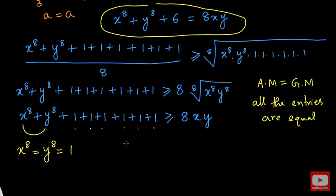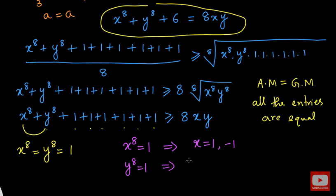First, let's take x to the power 8 equal to 1. The solutions satisfying this equation are x equal to 1 and negative 1, because 1 to the power 8 is 1 and negative 1 to the power 8 is also 1, since 8 is an even power. The same applies for y to the power 8 equal to 1 — we get y equal to 1 or negative 1. But we cannot take any random combinations for x and y; we have to be careful about the sign of the numbers.